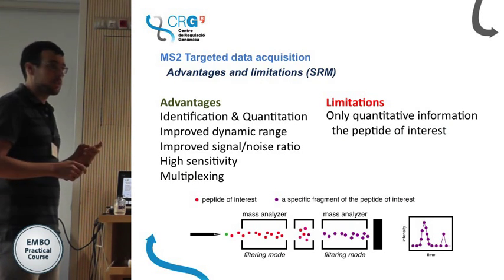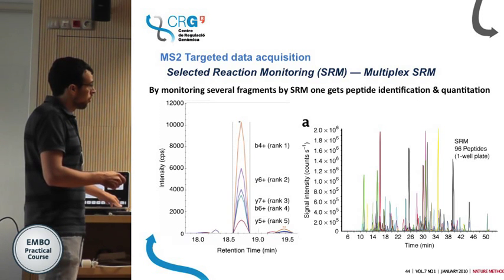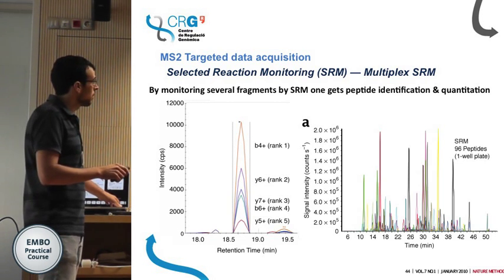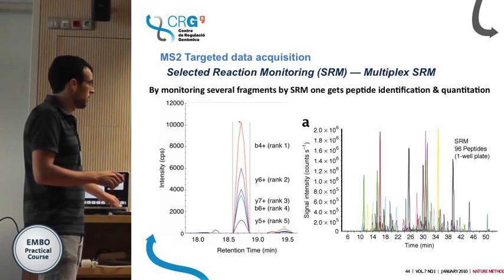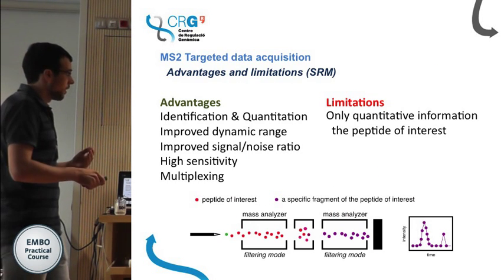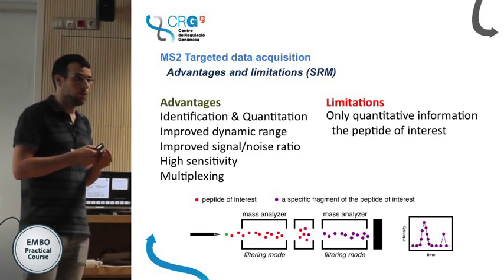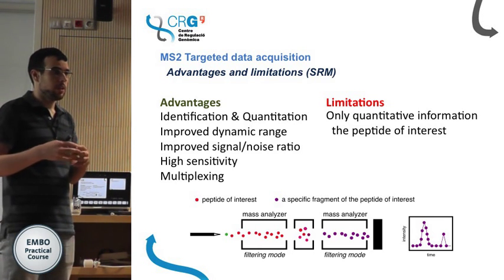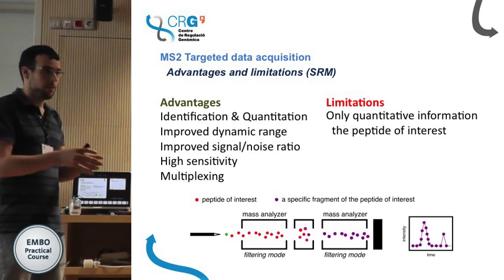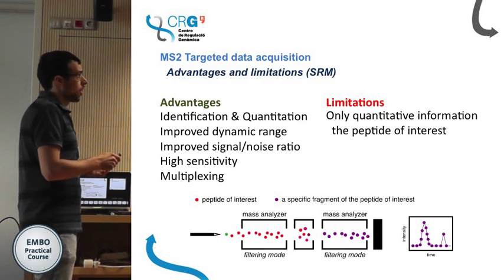We can multiplex: in one run we can target 96 different peptides — the equivalent of doing 96 western blots in one run. For each peptide we have a relative intensity, and if we do this in several conditions or samples, we can do relative quantification. Advantages of SRM: we have both identification and quantification with the same signals — the area under the peak for quantitation, and the list of transitions with intensity rankings for identification. We also have improved dynamic range, improved signal-to-noise due to double filtering, high sensitivity, and the possibility to multiplex. The limitation is that we only have data for the specific set of proteins selected before the experiment.